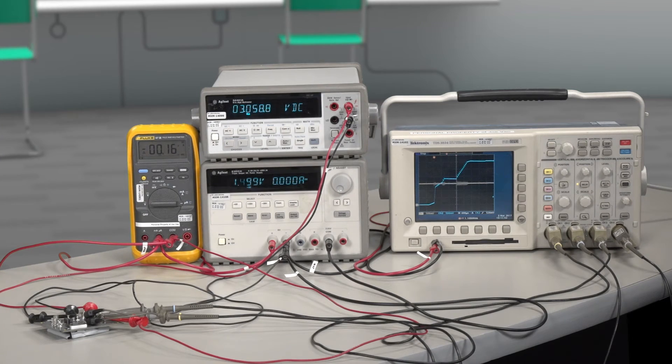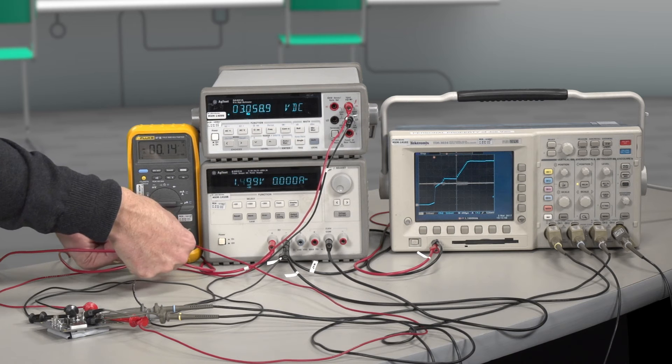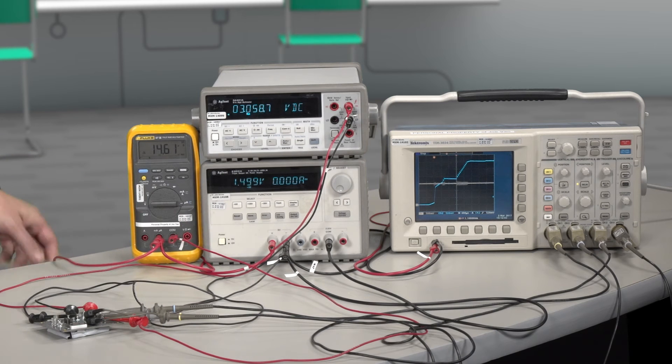Now let's look at input quiescent current. What we want to do is insert this current meter in series with the input voltage. And we see that the input quiescent current currently is 20 microamps.